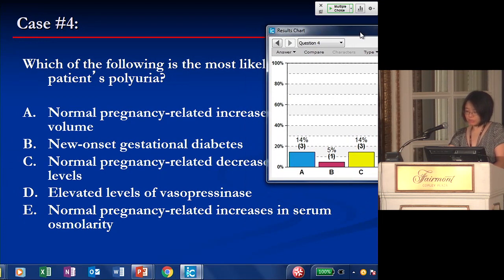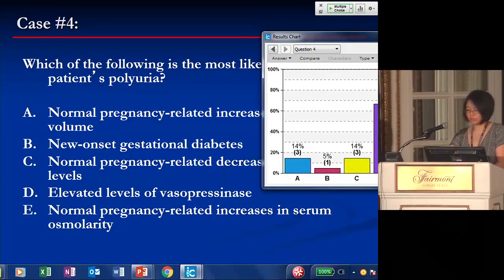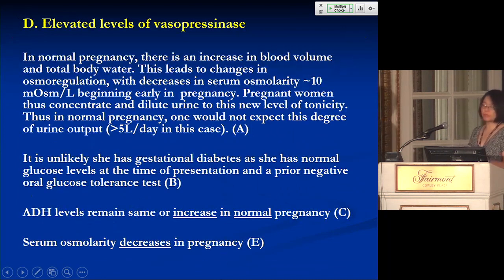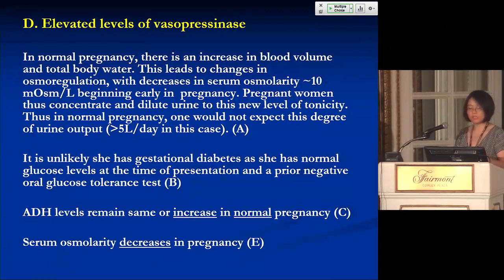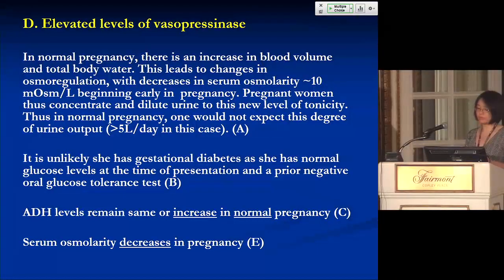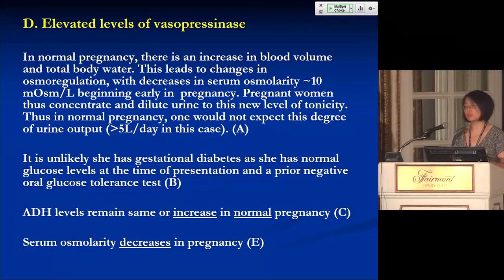The correct answer is D — elevated levels of vasopressinase. In normal pregnancy, there's an increase in blood volume and total body water, leading to changes in osmoregulation. Serum osmolarity drops by about 10 mOsm/L — a reset osmostat — and pregnant women can concentrate and dilute urine to this new level of tonicity. However, a urine output of five and a half liters exceeds normal pregnancy. The definition of polyuria is still greater than three liters per day regardless of pregnancy, so answers A and E are wrong. Gestational diabetes is unlikely given a normal glucose and negative oral glucose tolerance test.